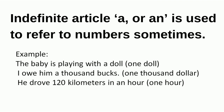The indefinite articles 'A' and 'An' are sometimes also used to refer to numbers. For example: 'The baby is playing with a doll' — that means one doll, so 'a' is indicating the number one. Another example: 'He drove 120 kilometers in an hour.' Here 'hour' gives a vowel sound, so we use 'an'.